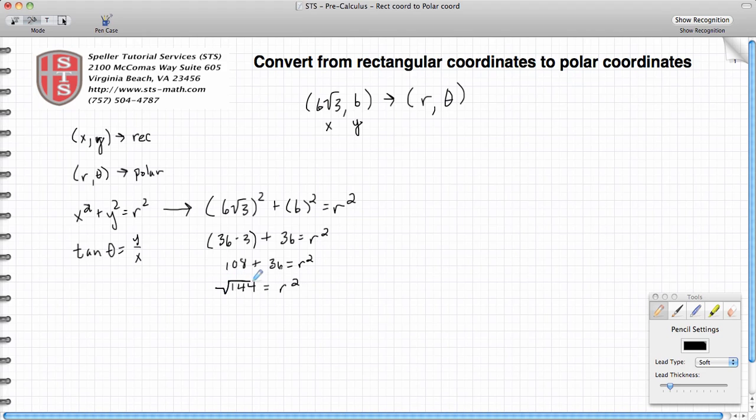Good news for us is that we have to take the square root of both sides, and 144 is a perfect square, so that answer is 12. So we see that r equals 12.